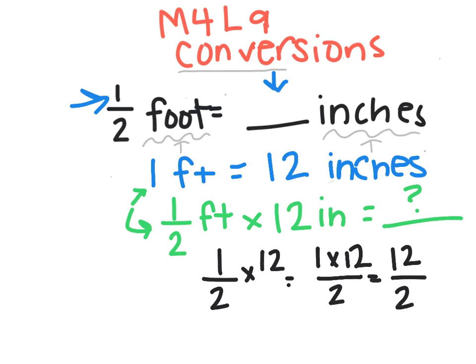But, you know, I don't want to leave that as a fraction. I want to simplify it or make the numbers smaller. So I can say, well, I know 2 can go into 12. 2 goes into 12 6 times. So 12 over 2 is 6. So I know one half foot equals 6 inches.